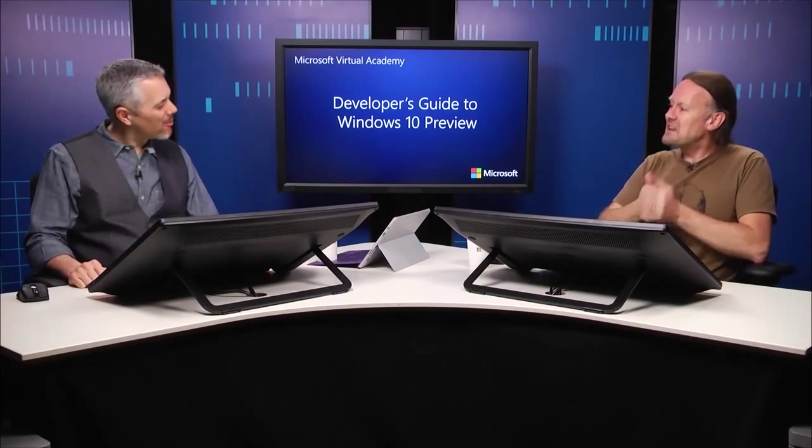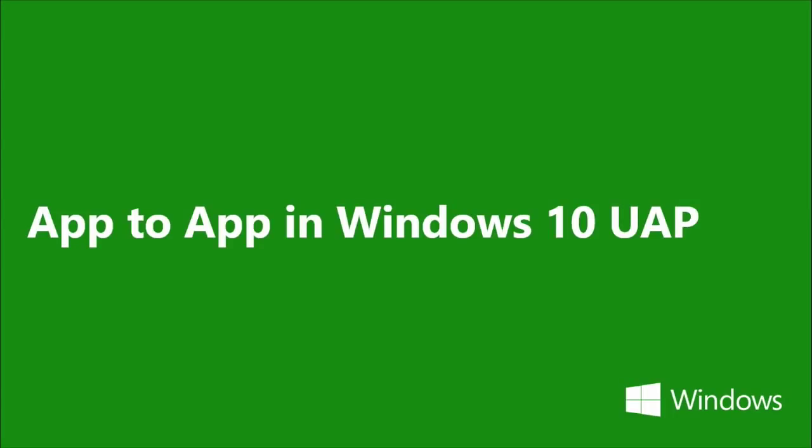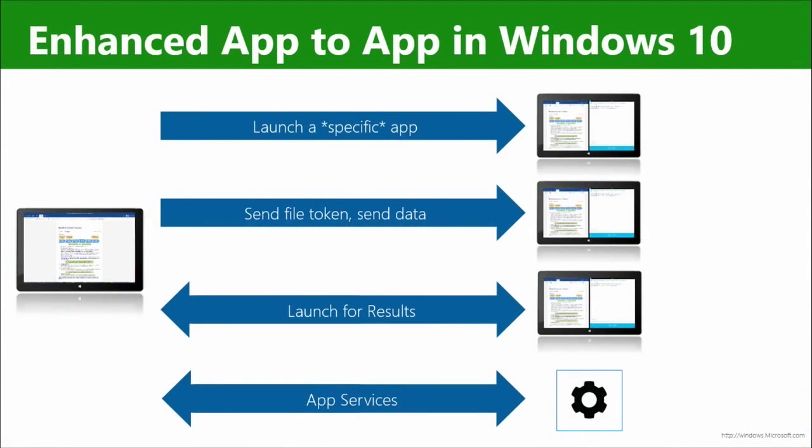We're in Windows 10 now — things are different. We had a lot of feedback, particularly from enterprises. So we've got some new stuff answering feature requests. We've added loads of stuff to our app-to-app communication. You can now launch a specific app, where the sender says 'I want you to launch an app that knows how to handle protocol sample app.'